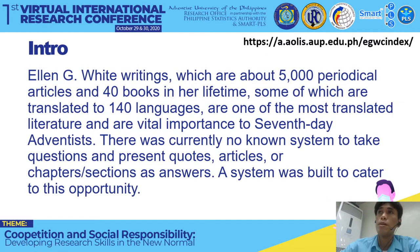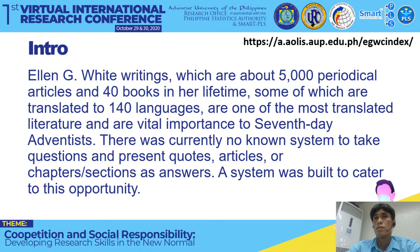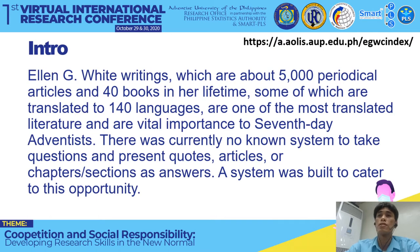Ellen G. White writings consist of about 5,000 periodical articles and 40 books which she wrote in her lifetime, some of which are translated into 140 languages. They are one of the most translated literatures and are of vital importance to Seventh-day Adventists. There was currently no known system to take questions and present quotes, articles, or chapter sections as answers.